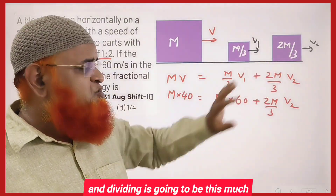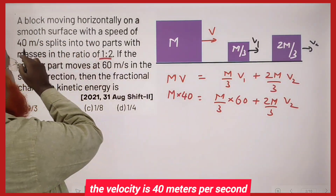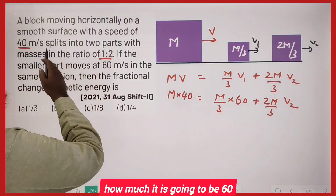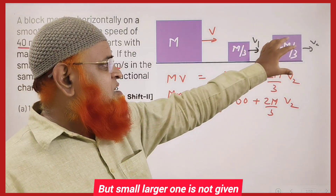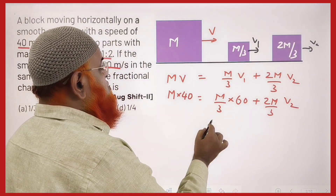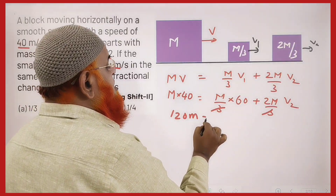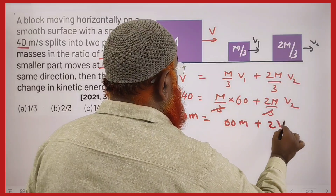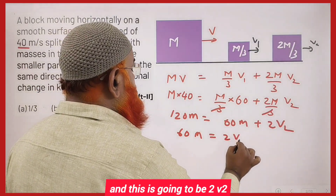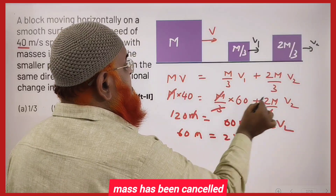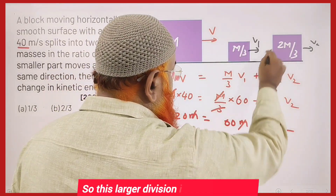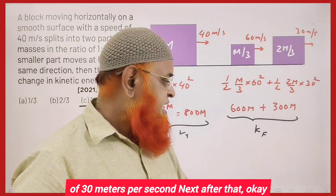Momentum before splitting equals momentum after splitting. Before splitting, velocity is 40 m/s, so momentum is M × 40. After splitting, the smaller piece is M/3 at 60 m/s and the larger piece is 2M/3 at v₂. Multiplying through by 3: 120M = 60M + 2Mv₂. Cancelling M: 120 = 60 + 2v₂, giving v₂ = 30 m/s. So the larger division has a speed of 30 m/s.